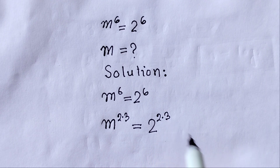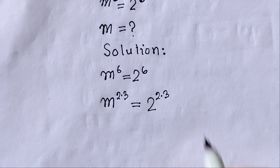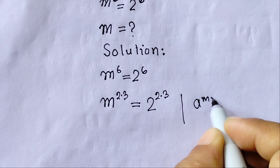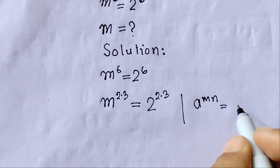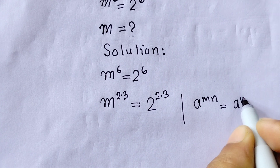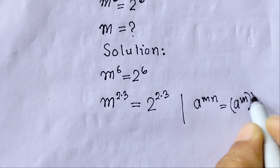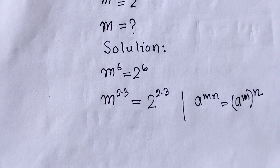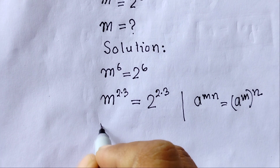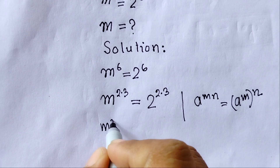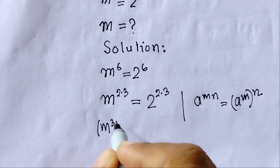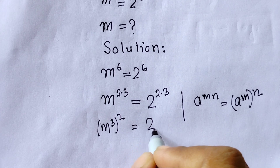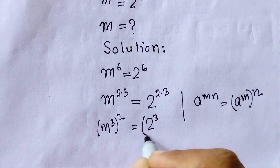First we focus on equation number 1: m cubed minus 2 cubed equals zero. We apply the difference of cubes formula, which states that a cubed minus b cubed equals a minus b, times a squared plus ab plus b squared.